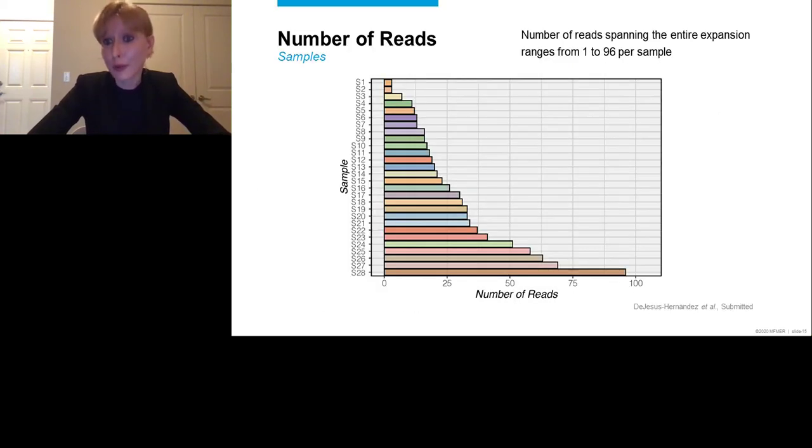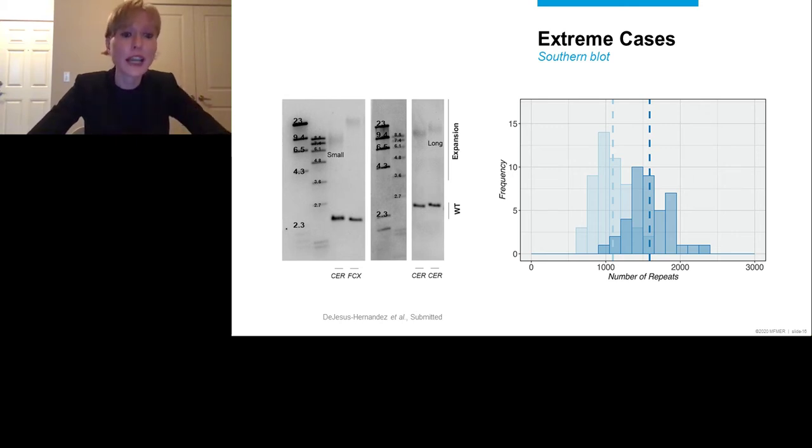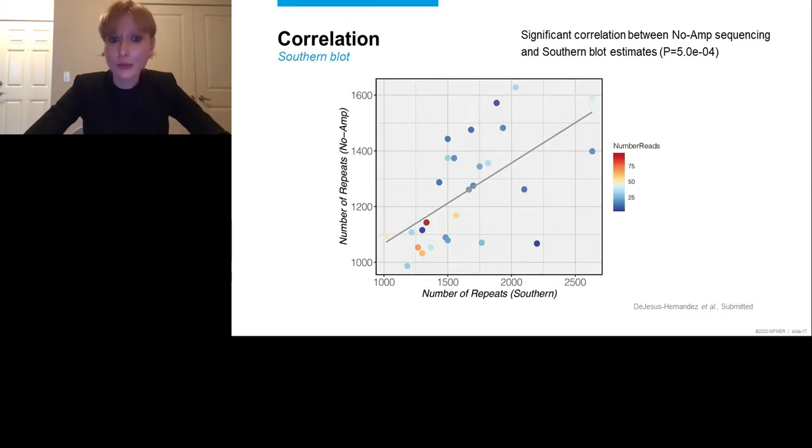You can see on this slide that there was a lot of variability between the individuals we investigated. Every single individual is displayed, individual 1 to 28, and then we've specified the number of reads for each given individual in each bar. And as you can see, it varies from 2 reads to almost 100 reads. In the next few slides, I will provide a potential explanation that may explain this potential variability between these samples. So on this slide, you can see some extreme cases. We looked at our southern blot results, and we selected an individual with a relatively small expansion, and an individual with a relatively long expansion in the cerebellum. And then we looked at our no-amp sequencing results. And as you can see, the individual with a small expansion is shown in light blue, and the individual with a long expansion in dark blue. And clearly, we're able to pick up this important difference, so that's very reassuring.